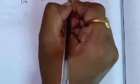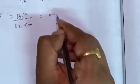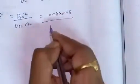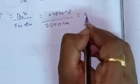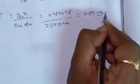Next, we calculate the coefficient of uniformity: Cu = D60 / D10 = 2.2 / 0.49 = 4.489, approximately 4.5. Next, the coefficient of curvature: Cc = D30² / (D60 × D10) = (0.98 × 0.98) / (2.2 × 0.49) = 0.89, approximately 0.9.